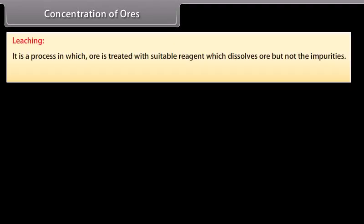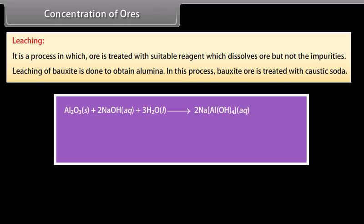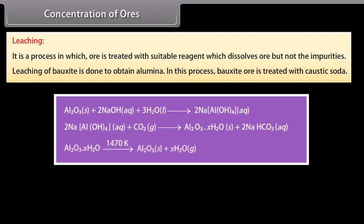Leaching. It is a process in which ore is treated with suitable reagent which dissolves the ore but not the impurities. Leaching of bauxite is done to obtain alumina. In this process, bauxite ore is treated with caustic soda. Al2O3 dissolves in concentrated solution leaving behind impurities. The aluminate in solution is neutralized by passing CO2 gas and hydrated Al2O3 is precipitated. The precipitate of Al2O3 is filtered, dried, and finally heated to about 1470 Kelvin to obtain pure Al2O3.